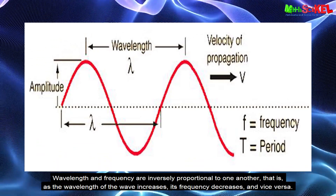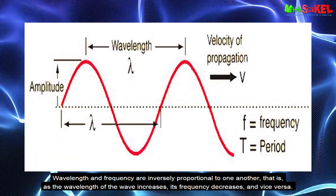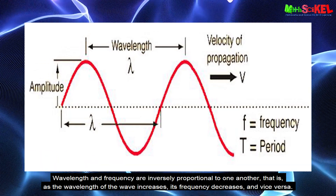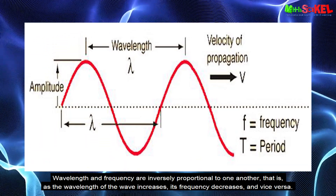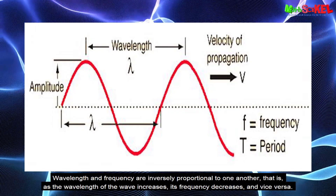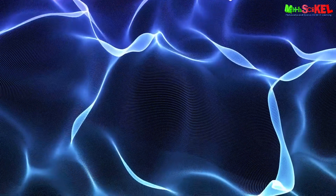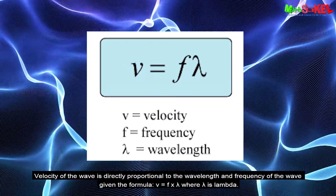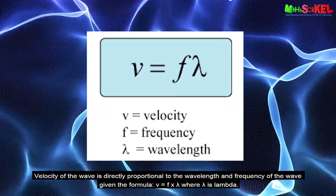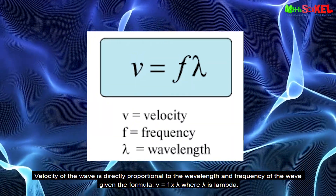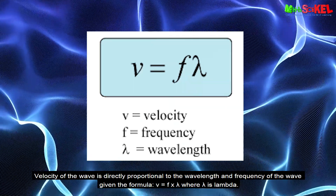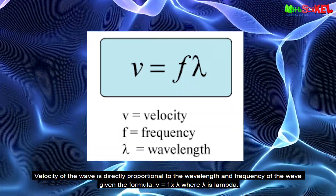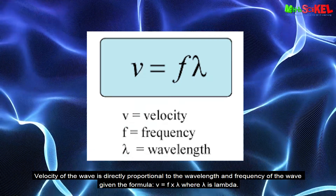Wavelength and frequency are inversely proportional to one another — as the wavelength of a wave increases, its frequency decreases, and vice versa. The velocity of a wave is directly proportional to the wavelength and frequency, given by the formula V equals frequency times wavelength, where the symbol for wavelength is lambda (λ).